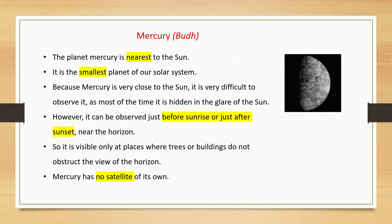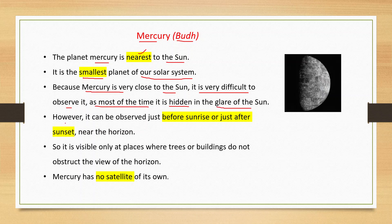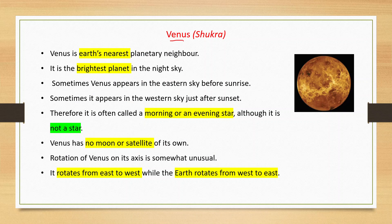Mercury, also known as Budh, is the nearest planet to the sun and the smallest planet of our solar system. Because mercury is very close to the sun, it is very difficult to observe as most of the time it is hidden in the glare of the sun. However, it can be observed just before sunrise or just after sunset near the horizon. Mercury has no satellite of its own.